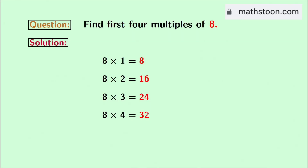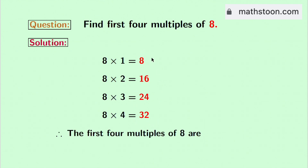So we have obtained the first 4 multiples of 8, which are the red colored numbers. The numbers are 8, 16, 24, and 32. And this is our final answer.